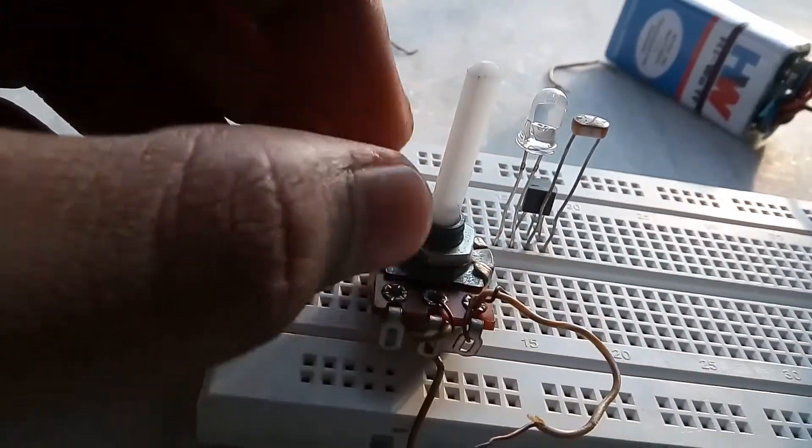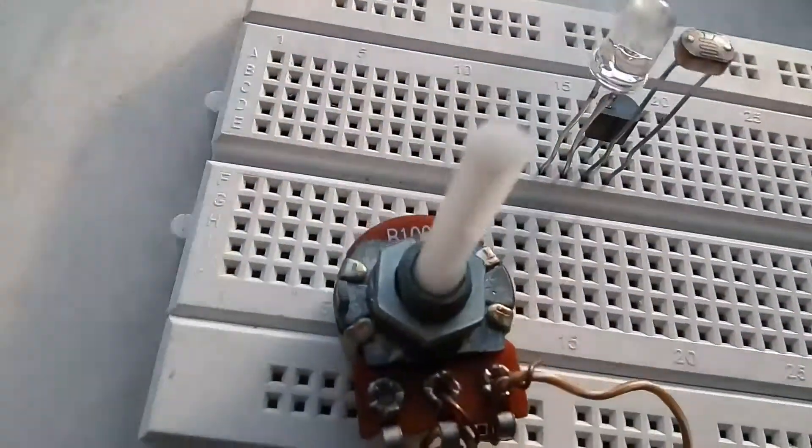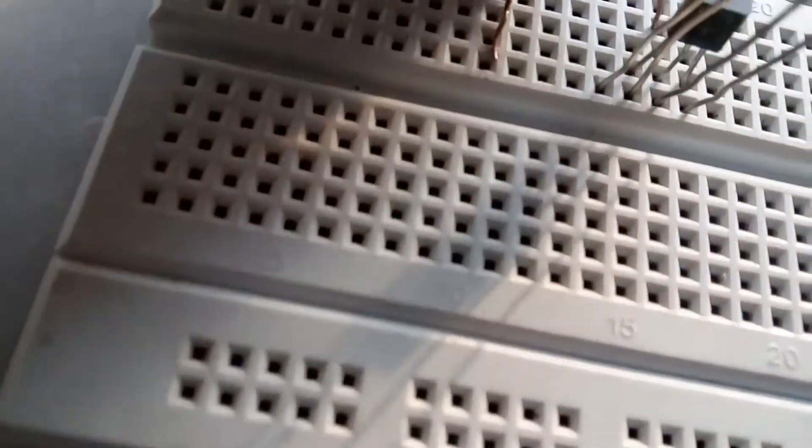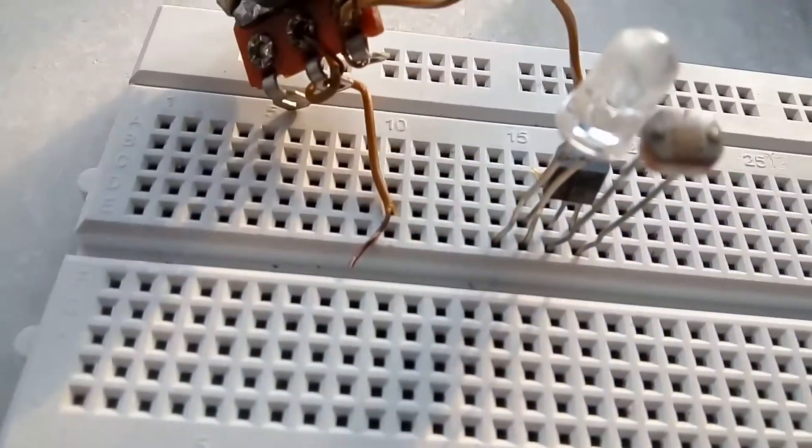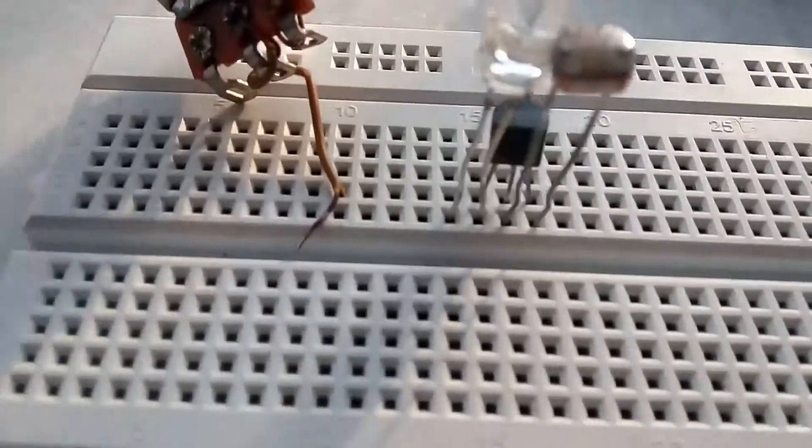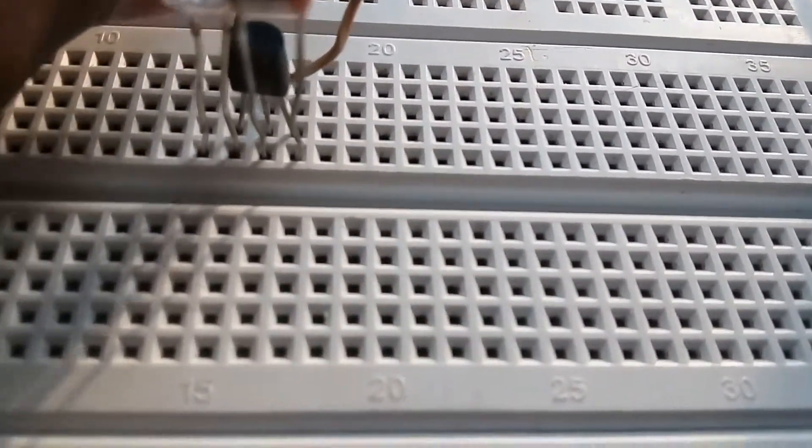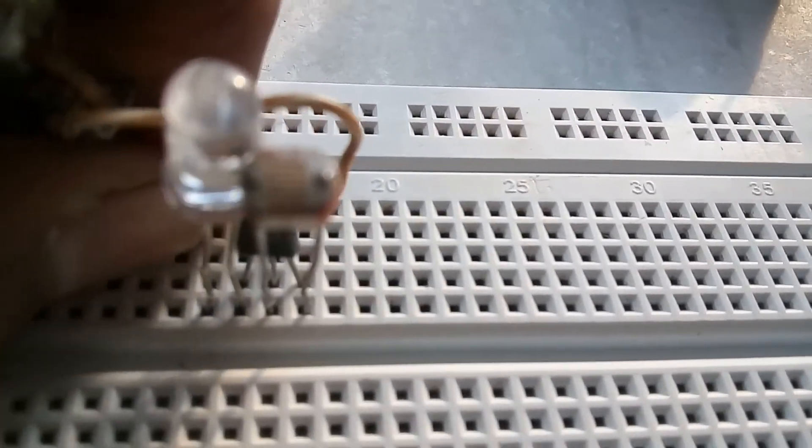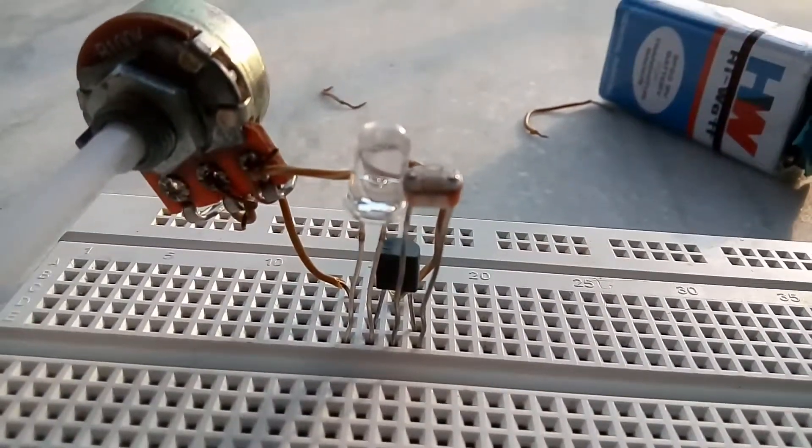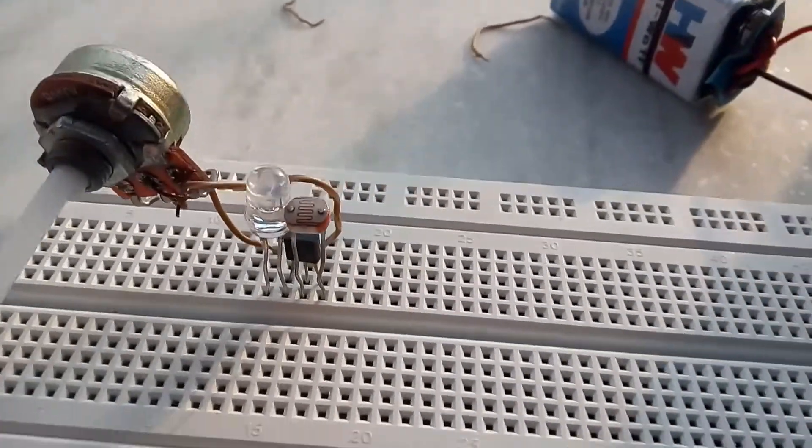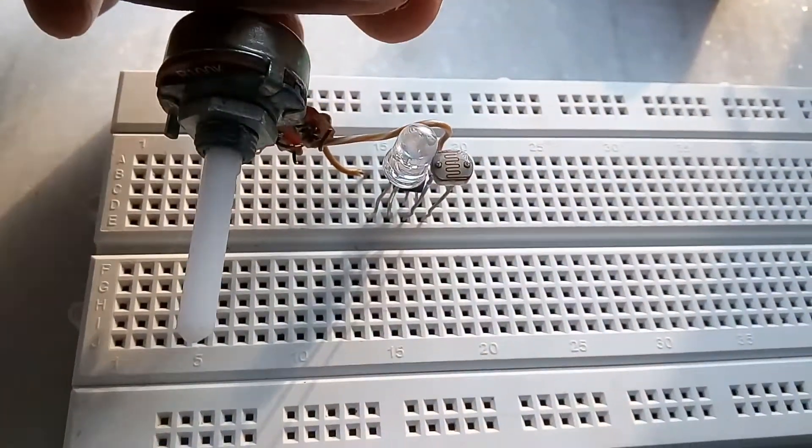Then take a hundred kilo ohm potentiometer, connect its one end to the base of the input transistor and the other end to the anode of the LED. Then take a connecting wire.